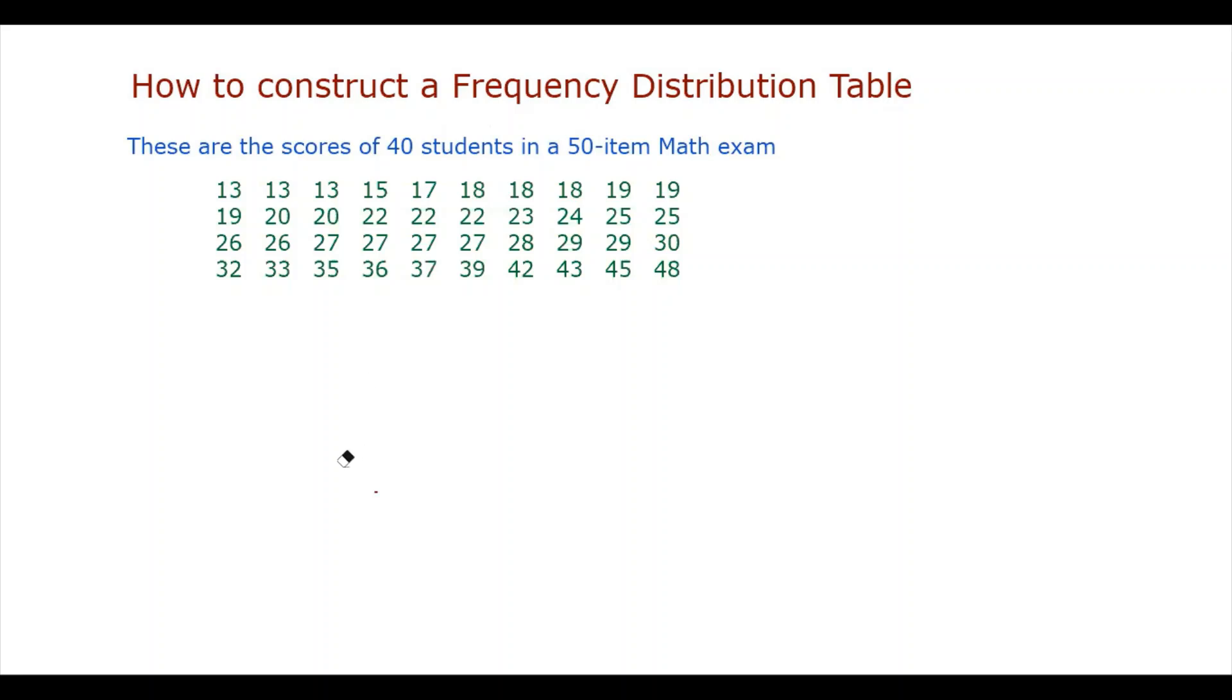So the first step in constructing a frequency distribution table is to determine the approximate number of class intervals. So we can have an arbitrary choice, maybe we can choose 5 or 10 class intervals. But today we're going to use a formula, namely Sturges formula. So it is given by K equals 1 plus 3.322 log N. N here is the number of observations in our data set.